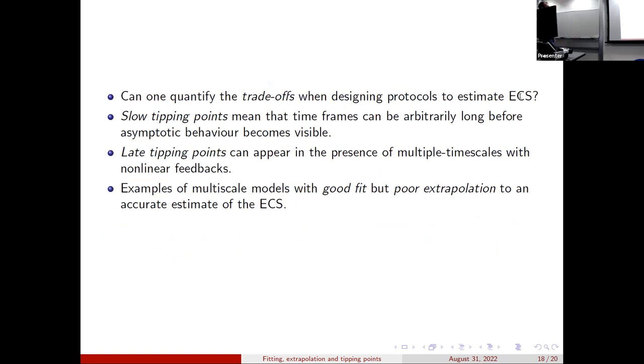So just to summarize, I think it would be an interesting question to find ways to quantify the trade-offs when designing protocols to estimate things such as climate sensitivity. I've not seen any way where that's been done systematically, but I'd be very interested. There's experts in the room. I'm sure they can maybe illuminate me on that. And also to say that different types of tipping points can have different effects on those estimates. Firstly, slowly tipping points means that the timeframes to get the asymptotic behavior can be arbitrarily long. And late tipping points can appear in the presence of multiple timescales. And these are sort of examples of simple examples of multiscale models where you get good fits for quite a long time, but poor extrapolation.